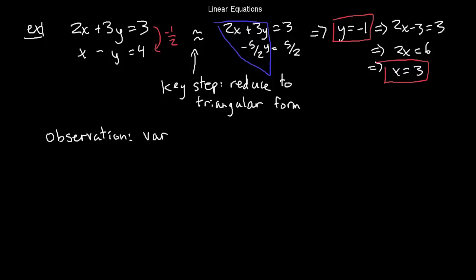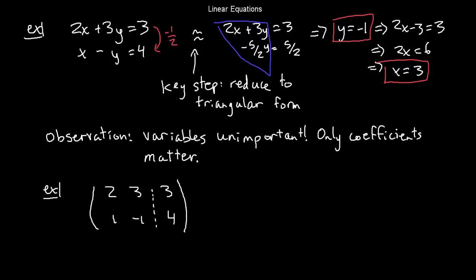Now, an observation to make is that the variables, the x and the y, weren't really very important. As long as we keep track of their position, really it's the coefficients that matter, not the variables. So you can encode all of the data that's in this system of linear equations in the form of a matrix. I just keep all the coefficients: 2, 3, 3, 1, minus 1, and 4. And I'll put a little dotted line so that it's clear to me which numbers are coefficients for variables and which numbers are solution vectors. And then when I multiply the first row by minus a half and add it to the second row, I get this. And you see that the left-hand side of this has got that nice triangular form.